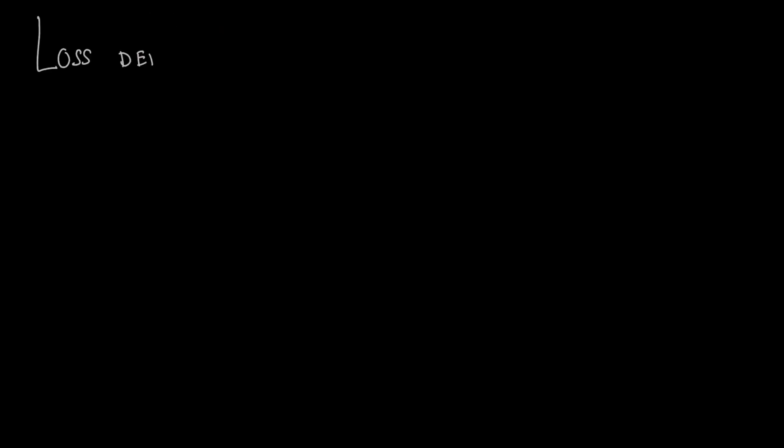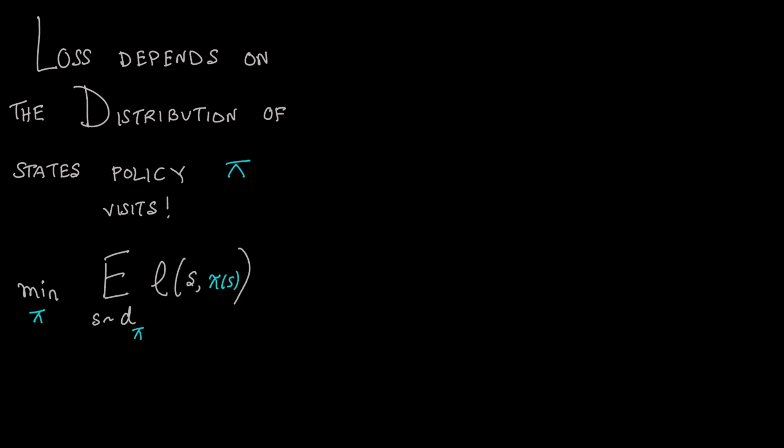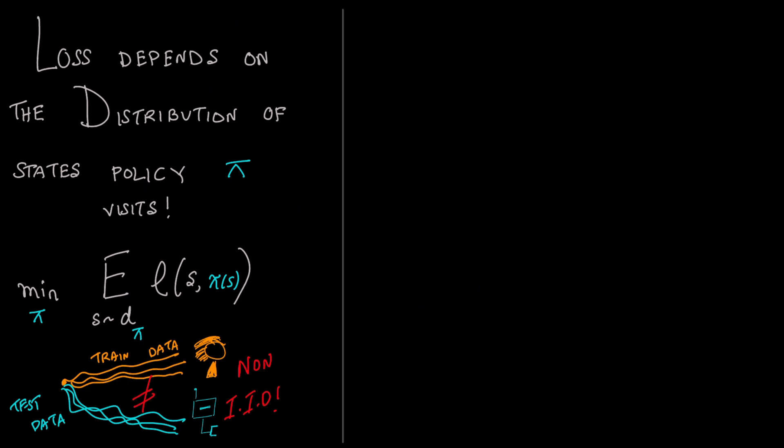It turns out that the loss of a policy depends on the distribution of states that the very policy visits. Different policy pi visit different states and observe different losses. So, even if the robot does well on the training data collected by the human, at test time it may make mistakes and visit states the human hasn't seen before. This mismatch between training and test time breaks a core assumption in supervised learning. The data is IID.